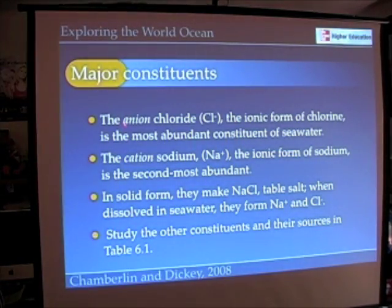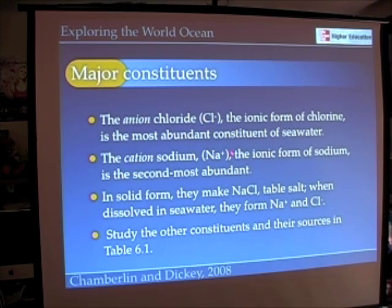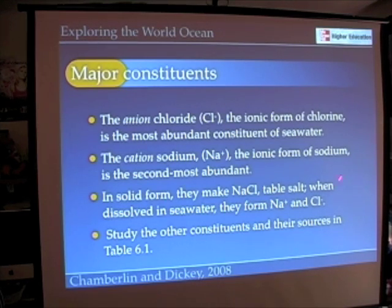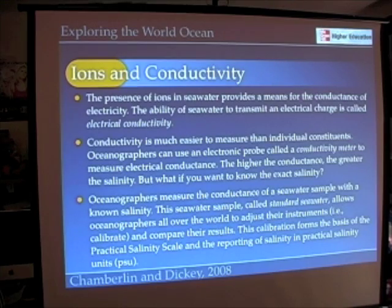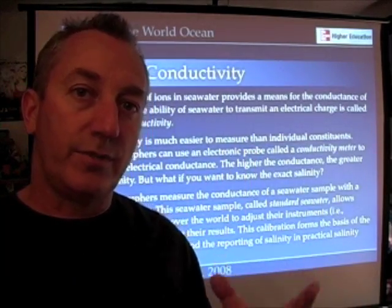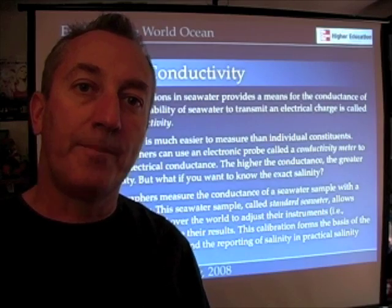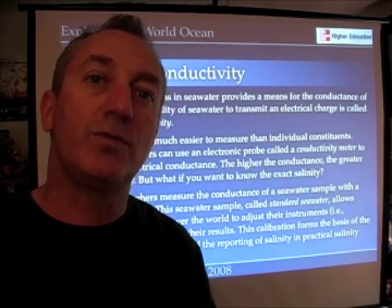I remember anion because of the letter 'n' for negative — anion starts with 'an' for negative. I remember cation because cats have paws — it's silly, but whatever it takes to help you remember. Together, sodium and chloride make sodium chloride, table salt. When dissolved in seawater they form sodium and chloride ions. It's the presence of these positive and negative charges in seawater that gives it a very important property useful for oceanographers.